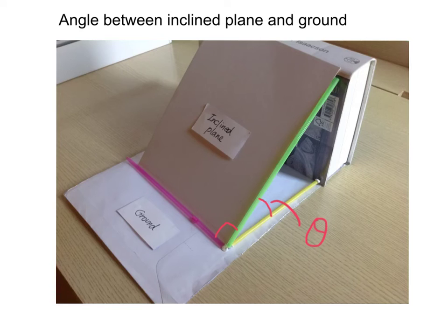Both straws, the yellow and the green one, should be perpendicular at 90 degrees to the red straw. And this is our line of intersection.